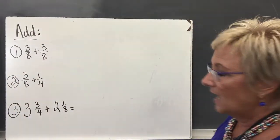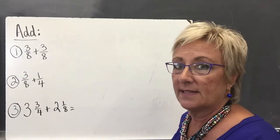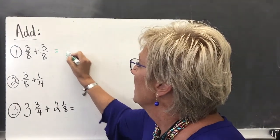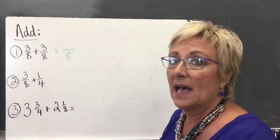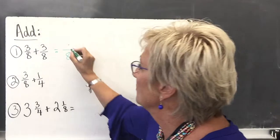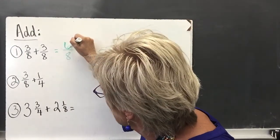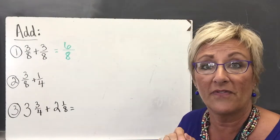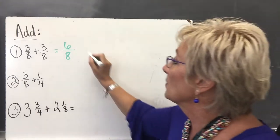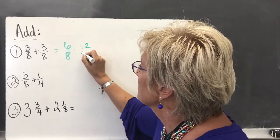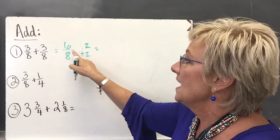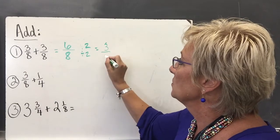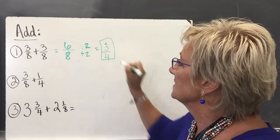Let's do a couple of these. If I am looking at 3/8 plus 3/8, I know I have a common denominator of 8, so I'm going to keep it as 8. All I have to do is add my numerators: 3 plus 3 gives me 6. I can reduce because the greatest common factor between 6 and 8 is 2. So I divide 2 into each: 6 divided by 2 is 3, and 8 divided by 2 is 4. And 3/4 is in its simplest form.